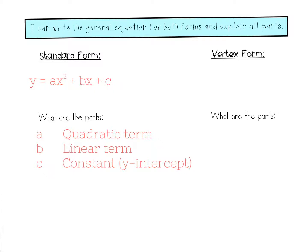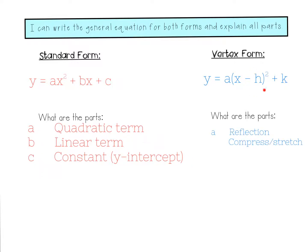Now let's talk about vertex form. Vertex form is y equals a times the quantity of x minus h, squared, plus k. The a in vertex form and the a in standard form are going to be the same — it tells me the reflection or the compression/stretch. Then I have my horizontal movement and my vertical movement, which together make up where my vertex is. So to write vertex form, I essentially just need my vertex and what is happening to the steepness or reflection of the graph.